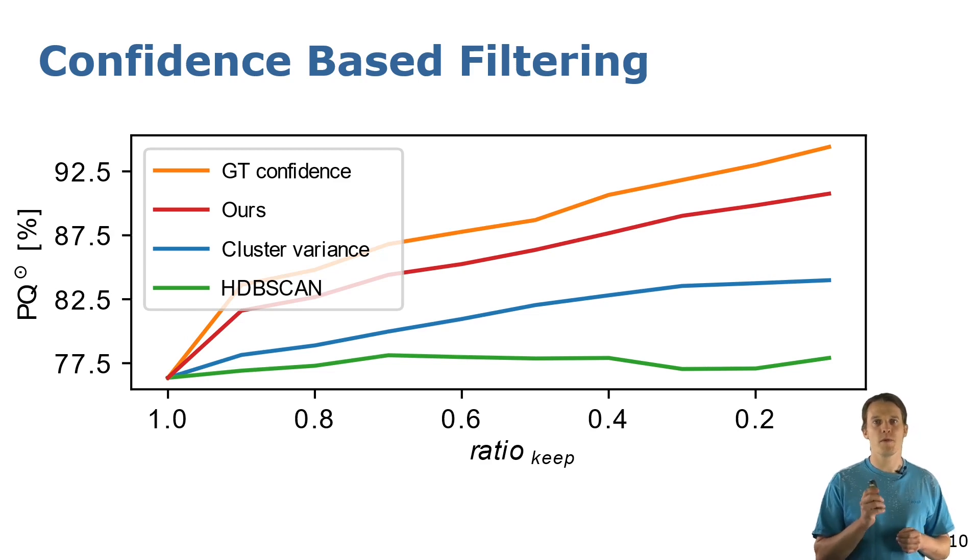In orange we show the upper bound, which is filtering by the ground truth confidences. These are computed as the intersection over union of the predictions with the ground truth labels.